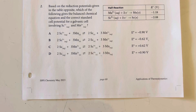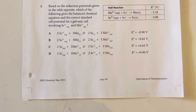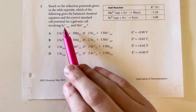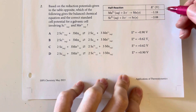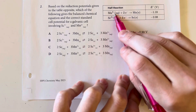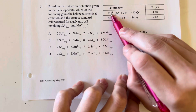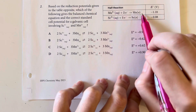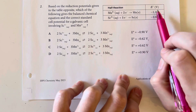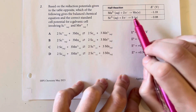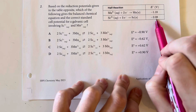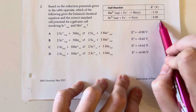Based on the reduction potentials given in the table, which of the following gives the balanced chemical equation and correct standard cell potential for a galvanic cell involving scandium-3 and manganese-2? Manganese going from cation form to solid has an E value of negative 1.18, and scandium turning into solid has an E value of negative 2.08.